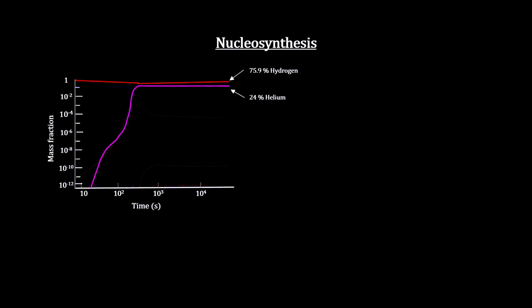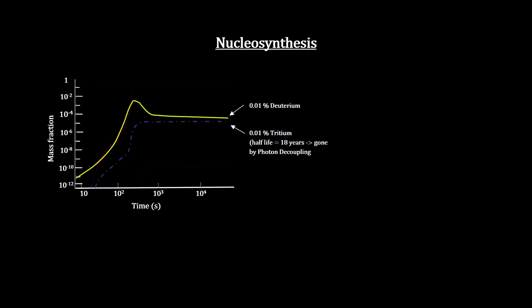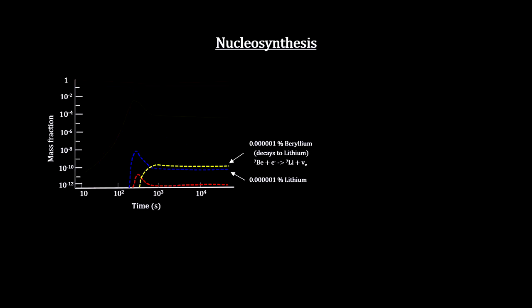The vast majority of the baryonic matter wound up in the form of hydrogen and helium nuclei. The percentages of deuterium and tritium were much smaller. There were just traces of beryllium and lithium. And the remaining free neutrons decayed over time into protons.